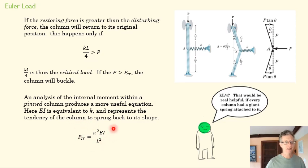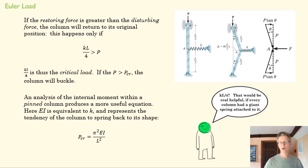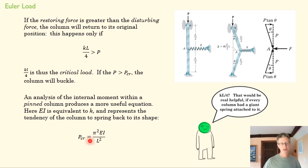If you want to look at this derivation, you can find it. But essentially, this is a way of saying: what is K in a column? And if we figure out what K is, then we can figure out what the pressure has to be in order to create a buckling load. If you reach that critical pressure — if the compressive force applied is bigger than P_critical — then you're going to be in danger of buckling.